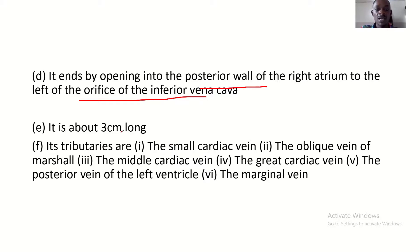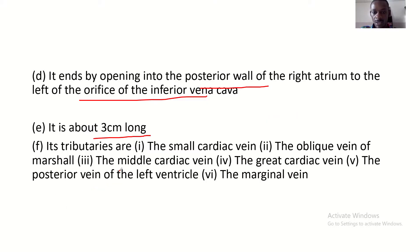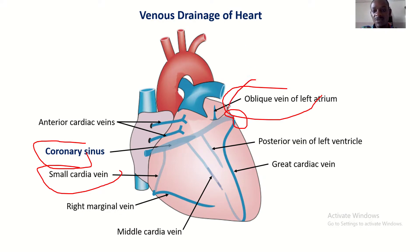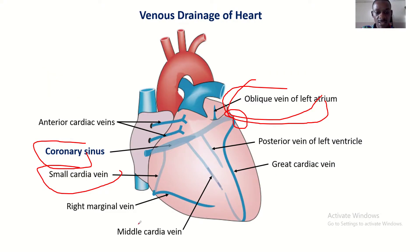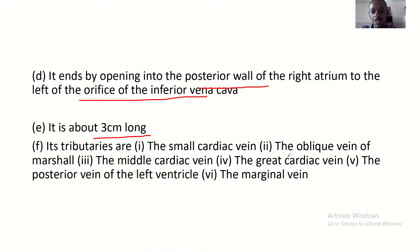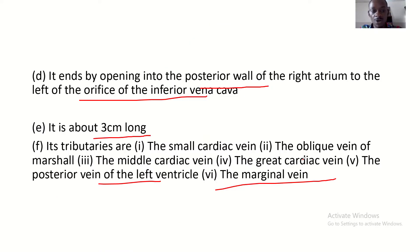The coronary sinus is about three centimeters long. Its tributaries include: the small cardiac vein, the oblique vein of Marshall, the middle cardiac vein, the great cardiac vein, the posterior vein of the left ventricle, and the marginal vein. The marginal vein runs along the margin and is also a tributary of the coronary sinus, though it may not be visible in this posterior view of the heart.